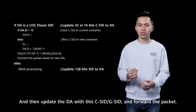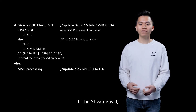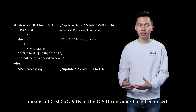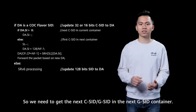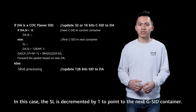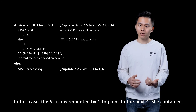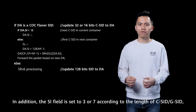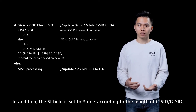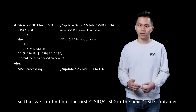The node then updates the DA with this C-SID and forwards the packet. If the SI value is zero, it means that all C-SIDs in the G-SID container have been used, so we need to get the next C-SID in the next G-SID container. In this case, the SL is decremented by 1 to point to the next G-SID container, and the SI field is set to 3 or 7 according to the length of C-SID, so that we can find the first C-SID in the next G-SID container.